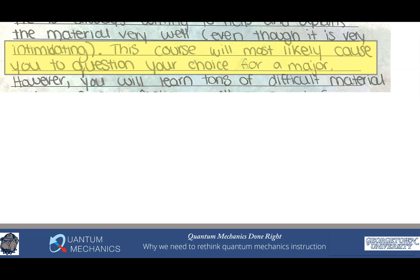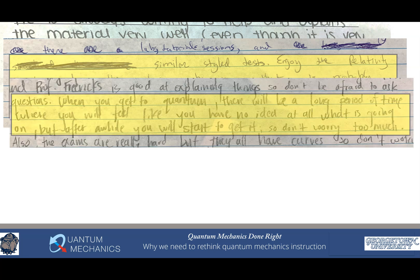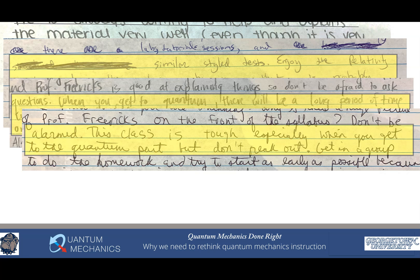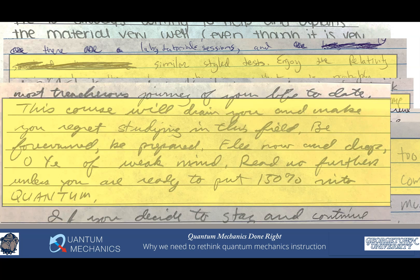This course will most likely cause you to question your choice for a major. Enjoy the relatively part of the class because that is probably the last thing you will understand. When you get to quantum there will be a long period of time where you will feel like you have no idea at all what is going on. This class is tough, especially when you get to the quantum part. But don't freak out. This class is difficult. Relativity is not too bad, but quantum is really hard. This course will drain you and make you regret studying in this field. Be forewarned. Be prepared. Flee now and leave, O ye of weak mind. Read no further unless you are ready to put 150% into quantum.